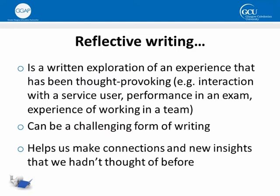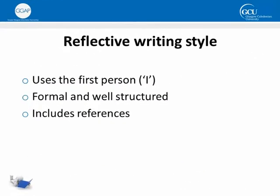This can allow us to develop new ways of thinking about things which can then help us improve our practice. Unlike traditional academic writing, reflective writing uses the first person or 'I' and that might seem a bit strange at first. Like traditional academic writing though, reflective writing does need to be as formal and as well structured as any other written assignment. It shouldn't include informal language or a chatty style. Reflective writing should make links with the literature, so it should include some references and we'll consider this in a bit more detail later.